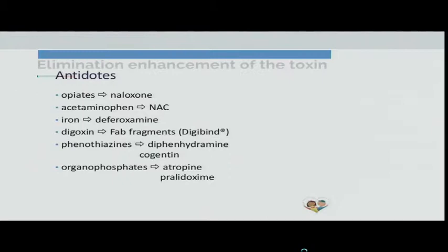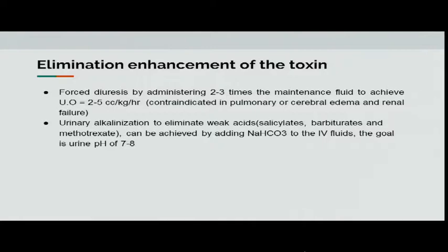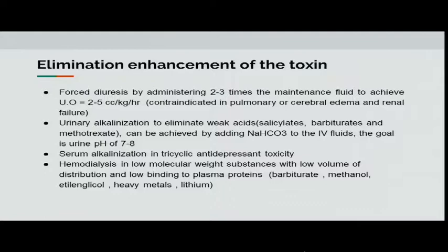For elimination enhancement of toxins: forced diuresis involves giving maintenance fluid two to three times the rate to increase urine output to 2 to 5 cc/hour. Urine alkalization with sodium bicarb is used to eliminate weak acids for salicylate or barbiturate poisoning. Hemodialysis is used for barbiturate, methanol, heavy metals, and lithium poisoning.